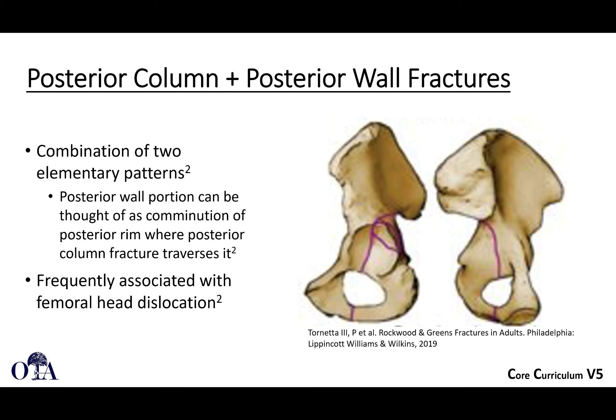The first associated type is the posterior column with associated posterior wall fracture. This is a combination of two elementary patterns: the posterior column fracture and the posterior wall fracture. When you put those together, you have the associated posterior column with posterior wall. This is frequently associated with a femoral head dislocation. You have to be careful that you truly have one of these and not just a very large posterior wall fracture. You can identify a fracture line coming through the obturator foramen, usually from the sciatic notch down, and then also a posterior wall fracture in addition to that.